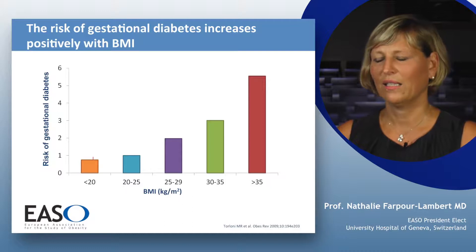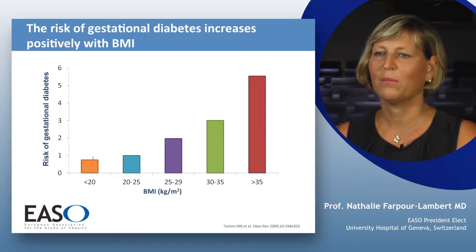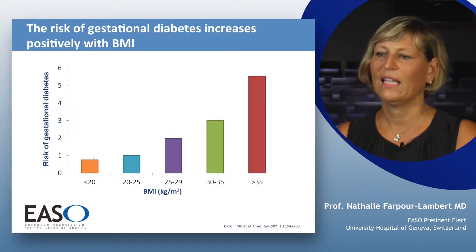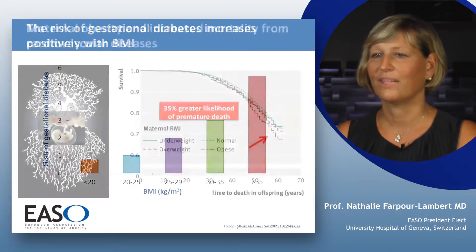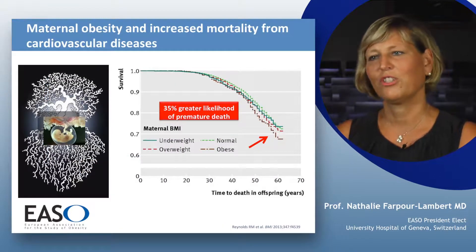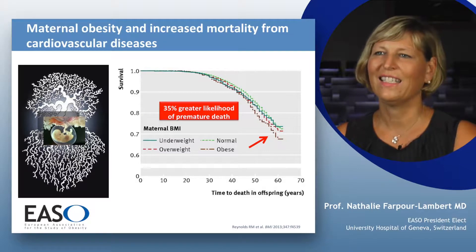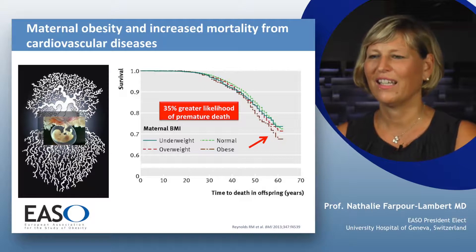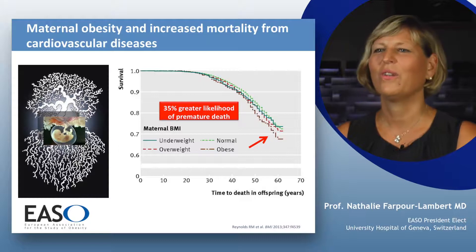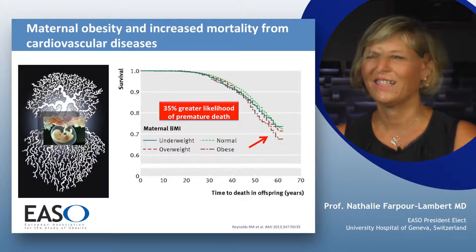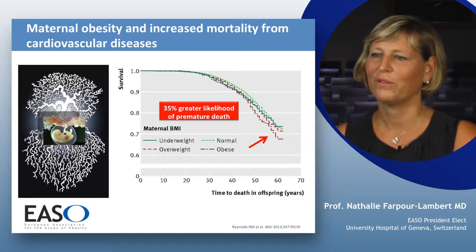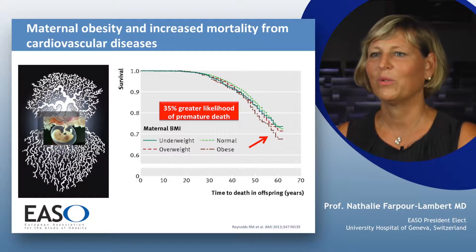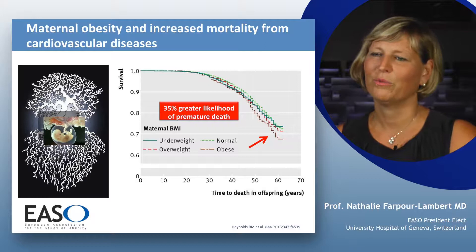We know that the intrauterine milieu may influence the metabolic programming of the fetus and then have an influence later in life on the premature development of chronic disease. The risk of gestational diabetes increases positively with the increase of body mass index. For example, in women in the overweight category with a BMI over 25, the risk of gestational diabetes is multiplied by 2. In women with a BMI over 35, this risk is increased by 6. A recent Norwegian study has shown that maternal obesity also increased mortality and the risk of cardiovascular disease later in life. They followed a cohort of newborns up to 70 years and found an association with maternal obesity and decreased life expectancy — 35% of persons born of an obese mother have a reduced life expectancy.